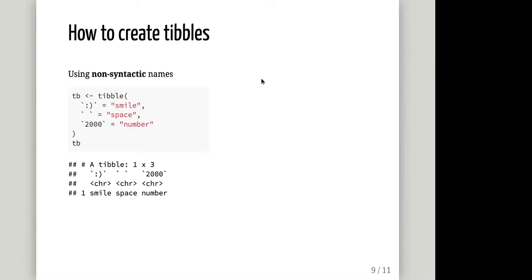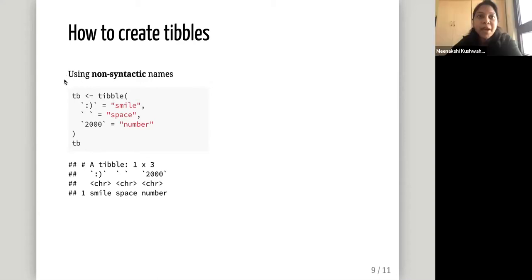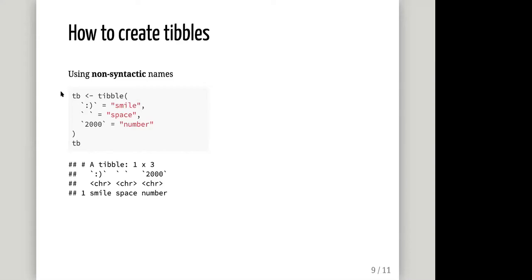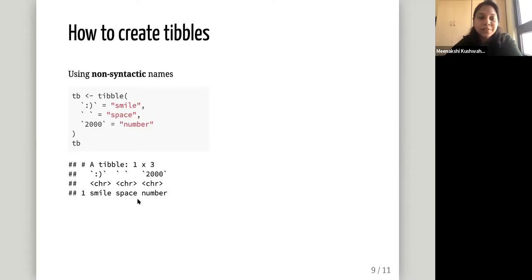Question: how is a tibble different from a data frame? Does it take less memory? I'll come to that — I actually don't know about memory. There is one slide on the difference, and for me it is just a difference in usability. The chapter doesn't discuss memory specifically.